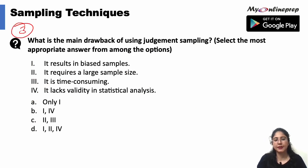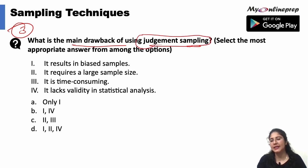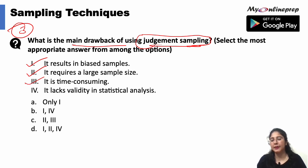Next, the third question: what is the main drawback of using judgment sampling? The first option is it results in a biased sample, second is it results in a large sample size, third is it is time consuming, and the fourth is it lacks validity in statistical analysis. The correct option would be option A.